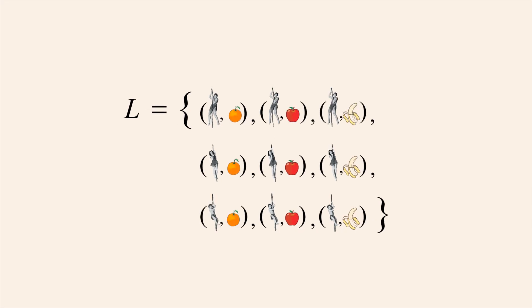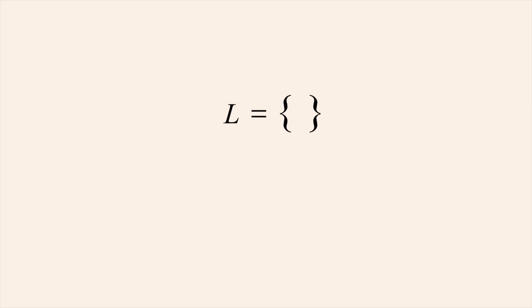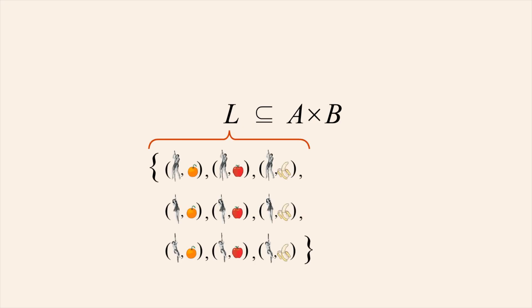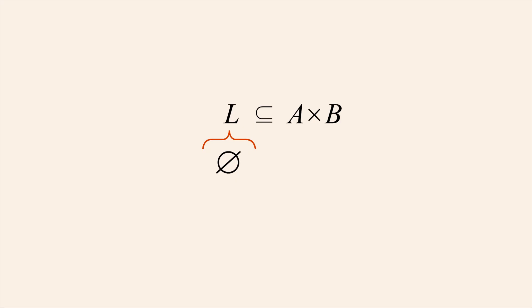On the other hand, it might be that nobody in set A likes fruit, in which case relation L would be the empty set. So a binary relation from one set to another is always a subset of their Cartesian product, since it can contain as many as all or as few as none of the ordered pairs in the Cartesian product.